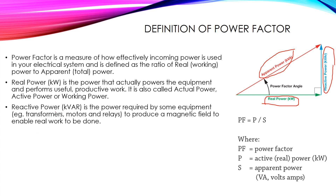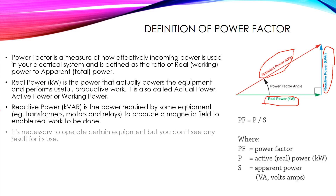This magnetic field enables the real work to be done. As we know from the principle of operation of transformers, we need to convert magnetic energy into electric energy and vice versa — an electromagnetic conversion. In order to convert from electric to magnetic, we need reactive power. So reactive power does not produce any useful work; it only serves to produce a magnetic field. It is necessary to operate certain equipment, but you don't see any direct useful result from it.